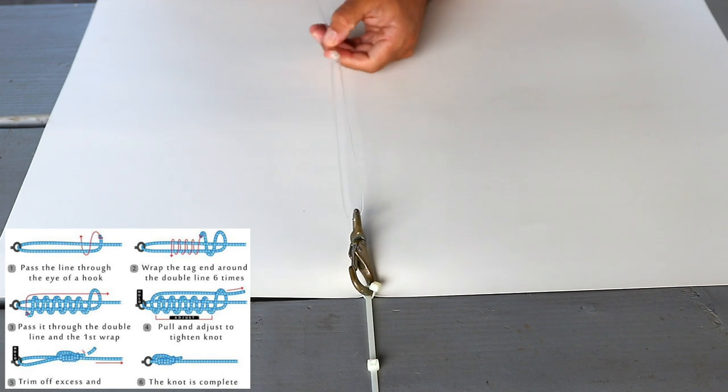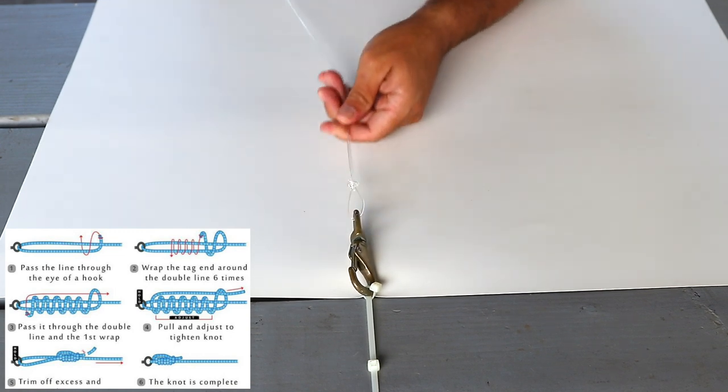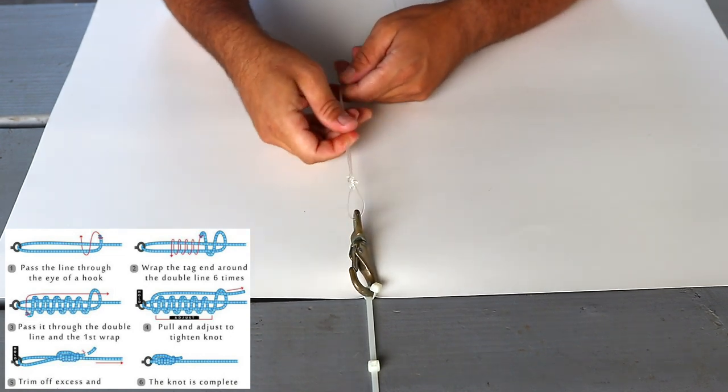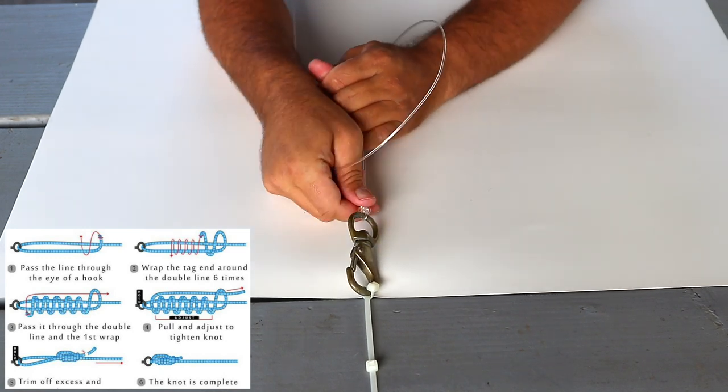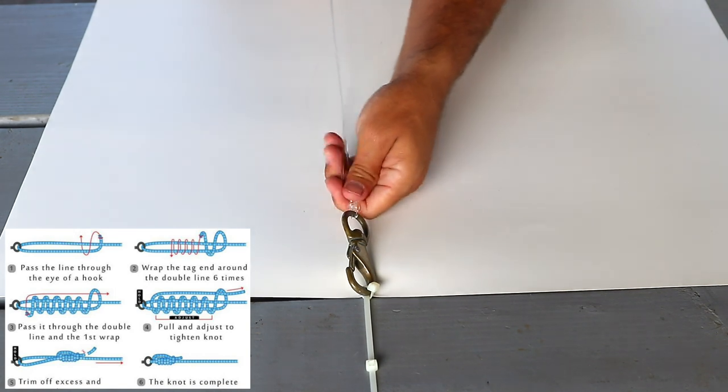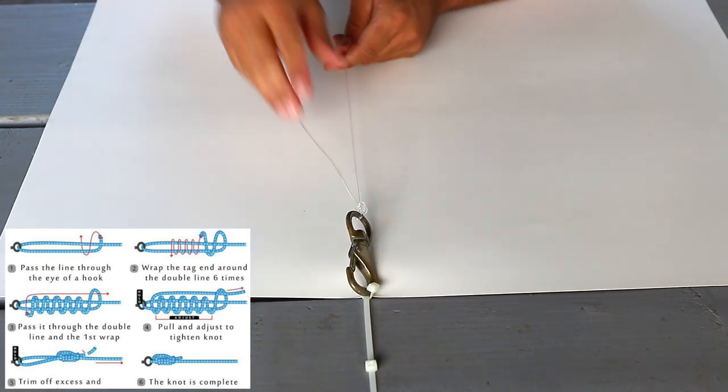After you pull the tag end and the main line end tight, you want to just cinch it down slowly and then pull it all the way to the end. Then just make sure you give both of them a good tug, especially the tag end, make sure the knot's good on there and firm.